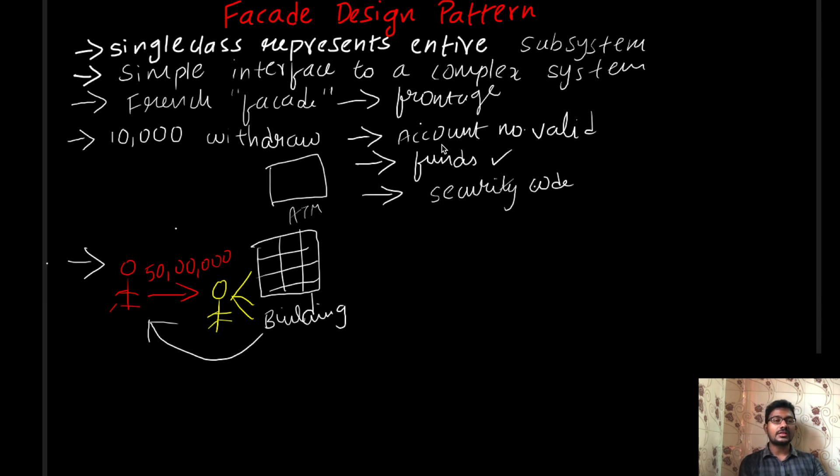First, it will check whether the account is valid or not. Then it will check whether your account has sufficient funds for withdrawing 10,000 rupees. And then it will check whether your pin code is correct or not.